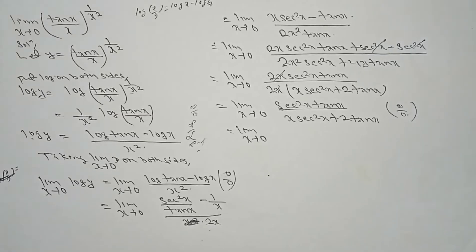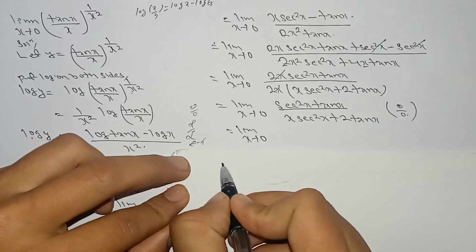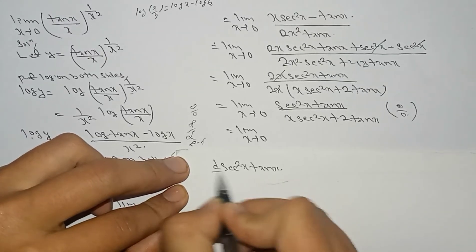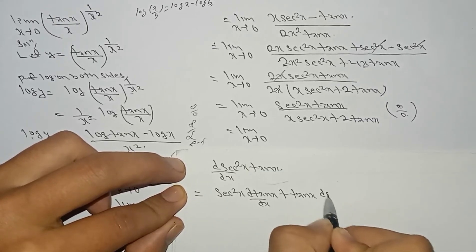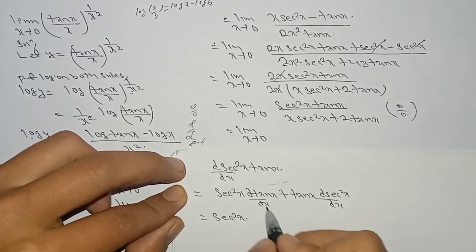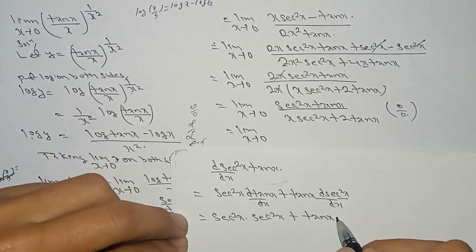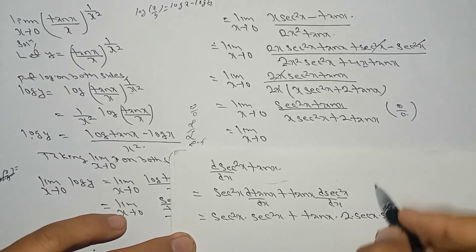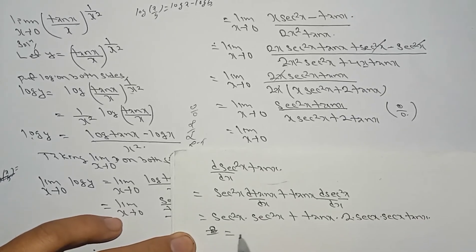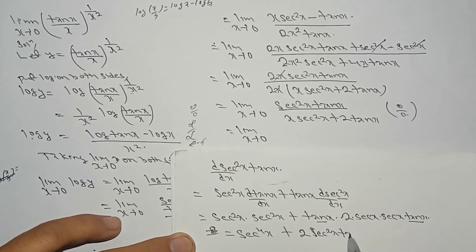Since it is still in the 0/0 form, we apply L'Hôpital's rule again. For the numerator sec²x·tan x, using the product rule: sec²x · d(tan x)/dx + tan x · d(sec²x)/dx = sec²x · sec²x + tan x · 2·sec x · sec x · tan x = sec⁴x + 2·sec²x·tan²x.